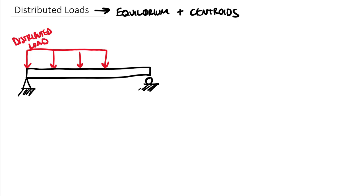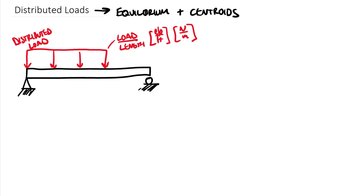When I say distributed load, the common term is distributed load versus distributed force, but realize that all of these loads are forces. They are expressed as a load per length — kind of like a linear density — so it would be in pounds per foot or in newtons per meter. Our goal here is to create an externally equivalent system. Externally means we're not looking at the internal stress and strain of the beam, but just the external effects like the reactions.